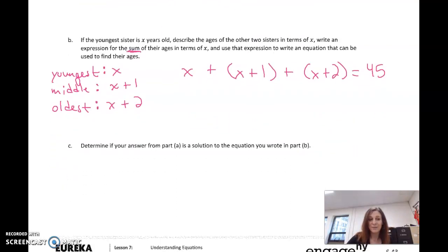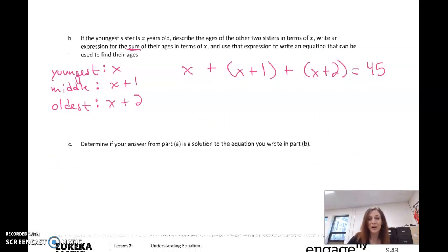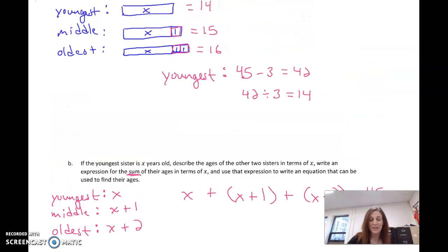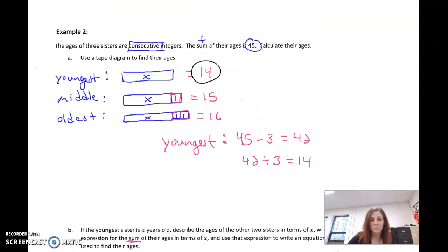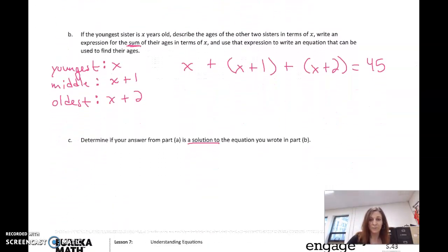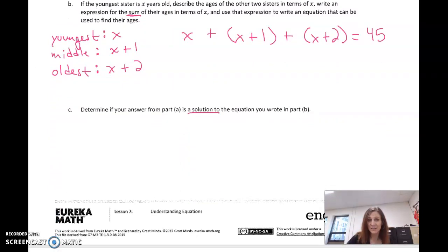So now, it says in part C, we'll finish up here, determine if your answer from part A is the solution to the equation you wrote in part B. So my answer in part A for the youngest sister was 14. Is that work for my equation down here? So basically, if I input X, input 14 for each of my X's and solve, does it equal 45?